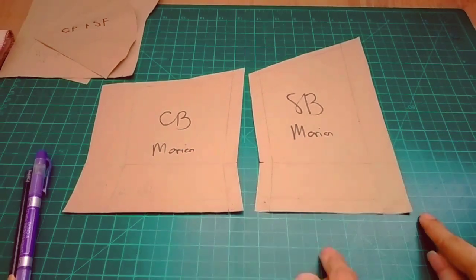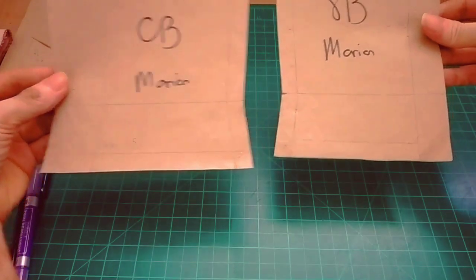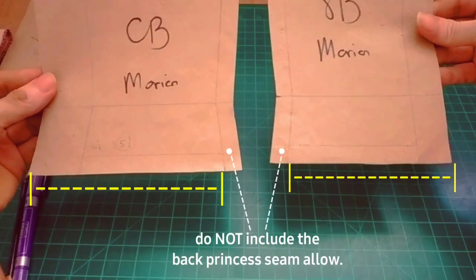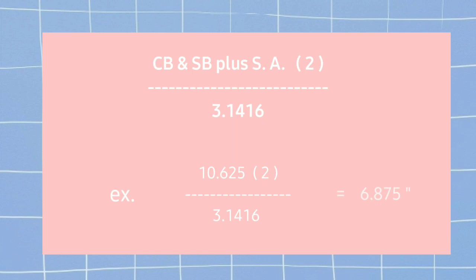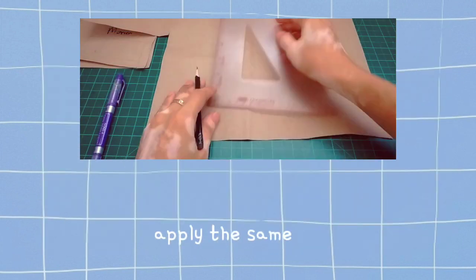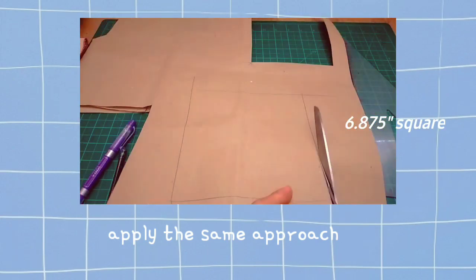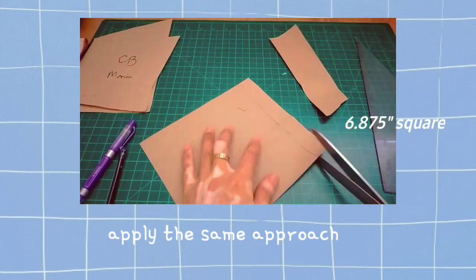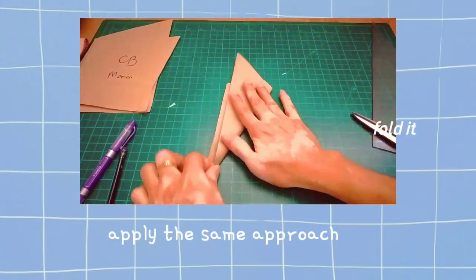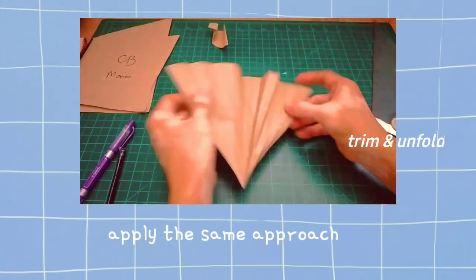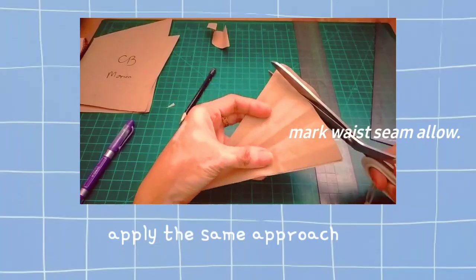For the back pattern, we're going to use the same approach. Get the CB and SB measurement, but not including the back princess seam. We have 6.875 inches for the square. After making the square, fold it and trim away the excess paper, then mark your waist seam allowance.